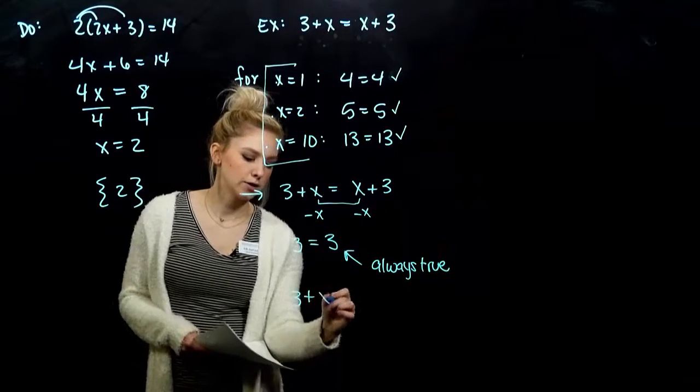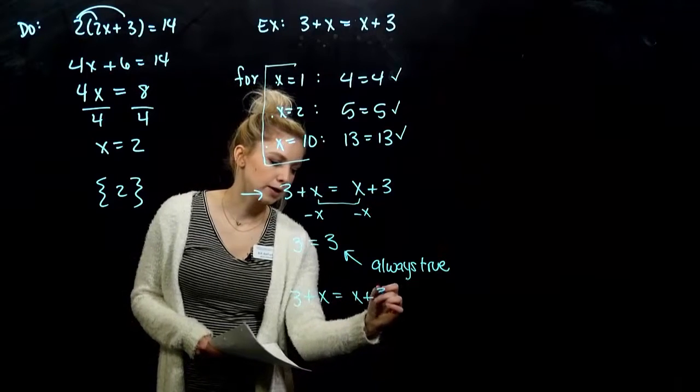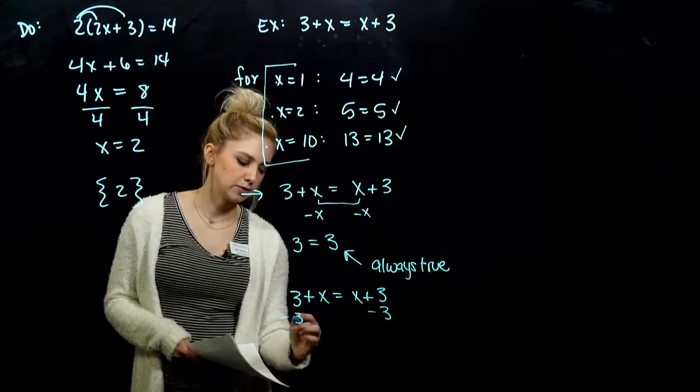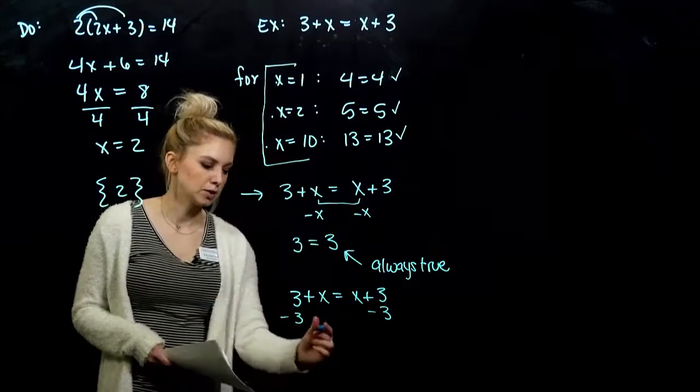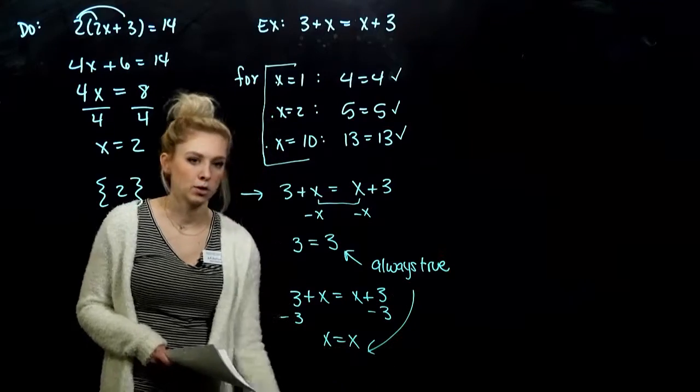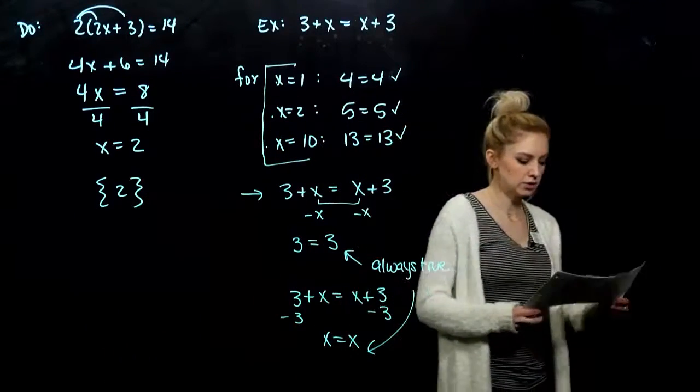Or, let's say you took that equation and started first by trying to get your constants together. If I subtract 3 from this side, I have to do the same over here. So I'm left with x is equal to x. Another statement that's always true.